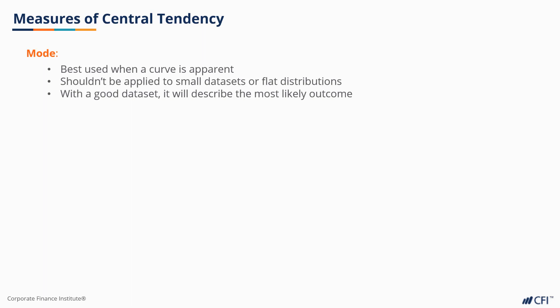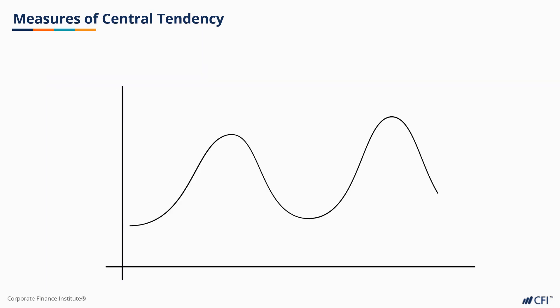This would be particularly true in a situation where there is a bimodal distribution. In this scenario, both the mean and the median do a poor job of predicting when the restaurant will be busiest as they land somewhere in the middle of our two humps. The mode would tell us exactly the peak hour. We can even apply a bimodal approach to identify multiple modes.